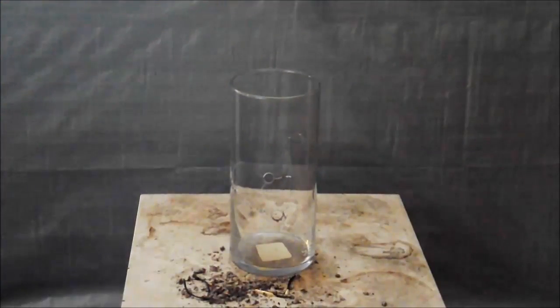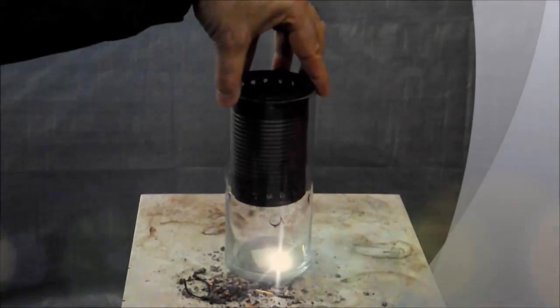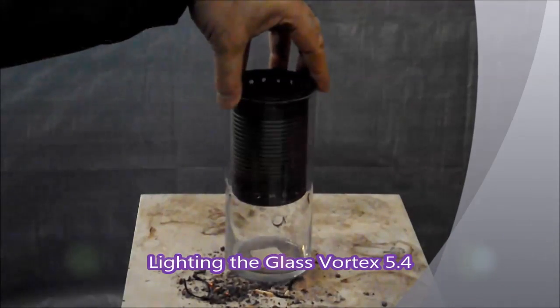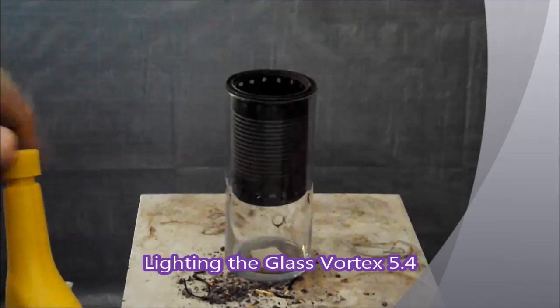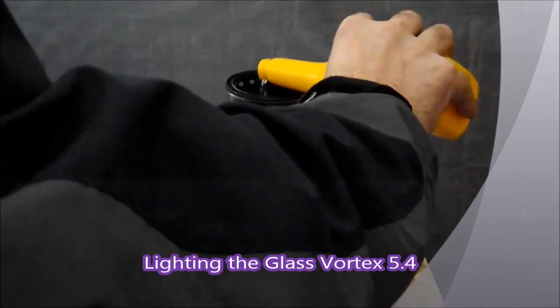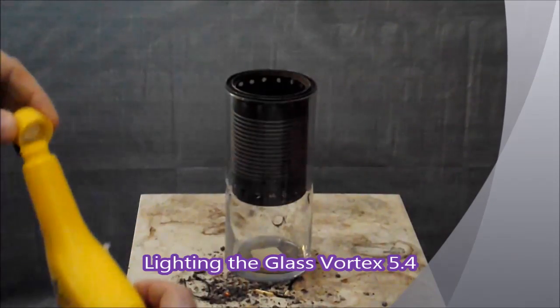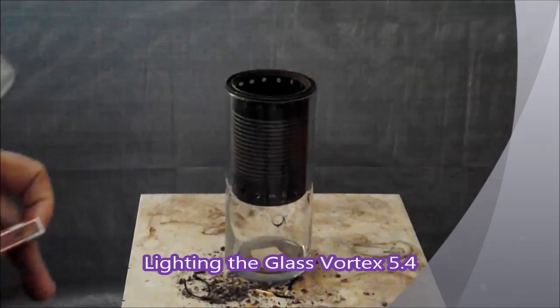The inner can is simply the Vortex 5.4 can that we've talked so much about, and it's just inserted into the top. The lighting of the glass Vortex 5.4 is the same, and so are the parameters as all the previous videos, with around one cup of wood pellets and a splash, in this case a little more than a splash, of liquid heat from the yellow bottle.